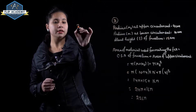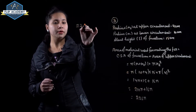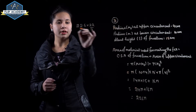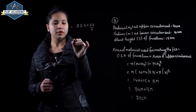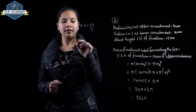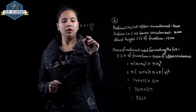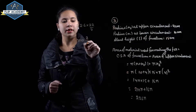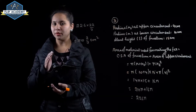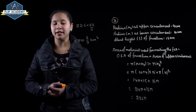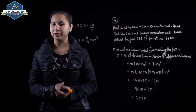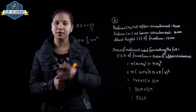Now substitute the value of pi: 226 into 22 upon 7, which equals 710 and 2 upon 7 centimeter square. So the required material equals 710 and 2 upon 7 centimeter square. Question number 3 is complete.